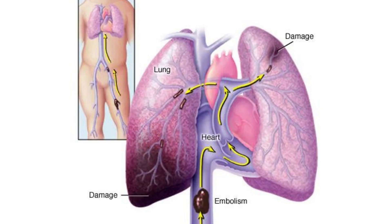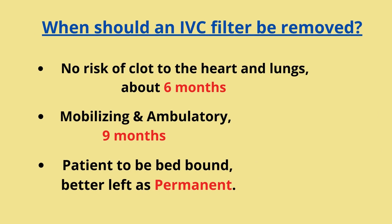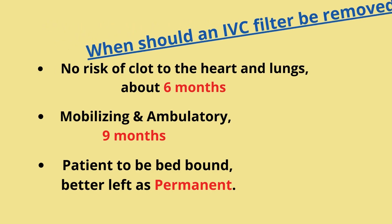Another problem with placement of the IVC filter is the continued risk of a blood clot that travels to the lungs. Retrievable IVC filters may be removed once the risk of a clot traveling to the heart and lungs passes, usually after about six months. It is recommended that if the patient is mobilizing and ambulatory, the filter can be removed in nine months once it's no longer needed. Otherwise, if the patient is going to be bed-bound, the IVC filter is better left as a permanent device.